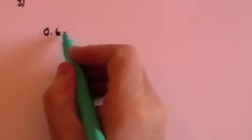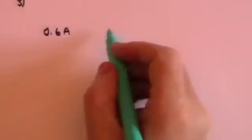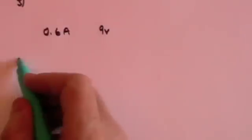And my final exam question says that I have a torch. The bulb in the torch requires 0.6 amps going through it and it's driven by a 9 volt battery and the first question, there are three questions here, the first question is what is the power that is used by that torch?